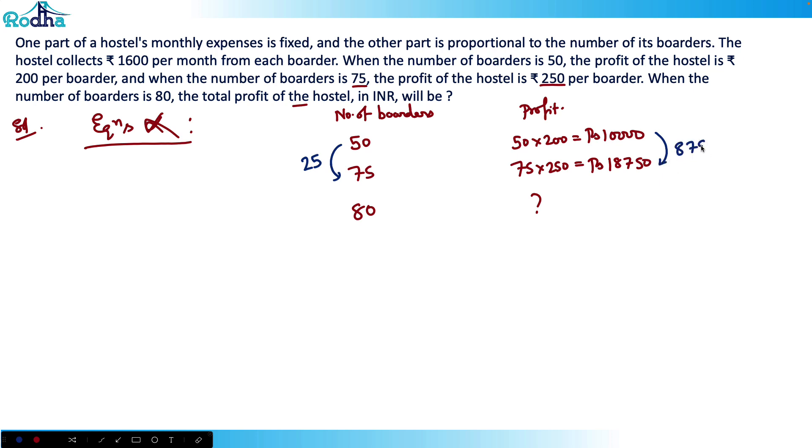So when the number of boarders increases by 25, the profit increases by 8750. When the number of boarders increases by 5, the profit will increase in the same ratio.